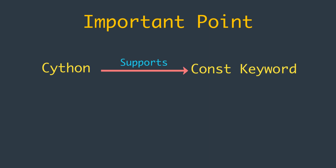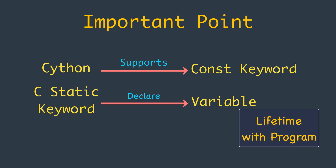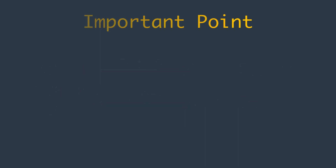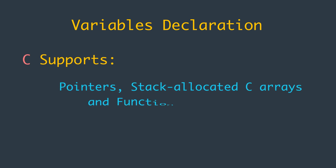The C static keyword is used to declare a variable whose lifetime extends to the entire lifetime of a program — it is not a valid Cython keyword, so we cannot declare C static variables in Cython. We can, however, declare different kinds of variables that C supports, like pointers, stack-allocated C arrays, and function pointers.